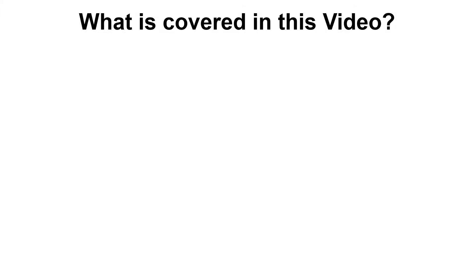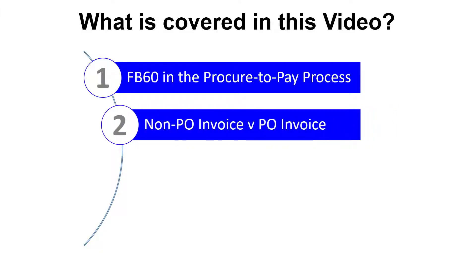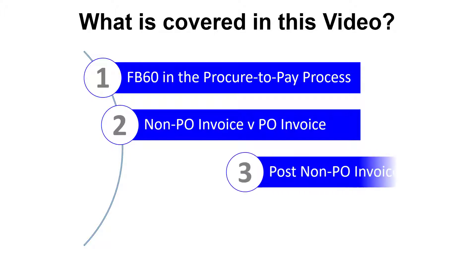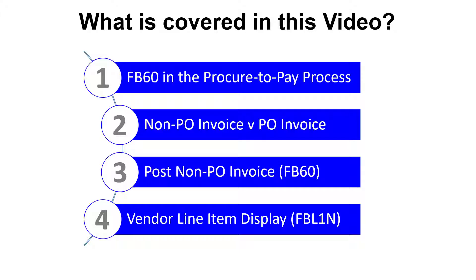Here's a list of our topics. First up, we'll confirm where Transaction code FB60 fits in the Procure2Pay process, followed by an explanation of the difference between a non-PO invoice and an invoice referencing a purchase order. Then it's on to the practical component: posting a non-PO invoice using Transaction FB60 in SAP. Once the invoice is posted, we'll analyse the vendor line item display, Transaction FBL1N.